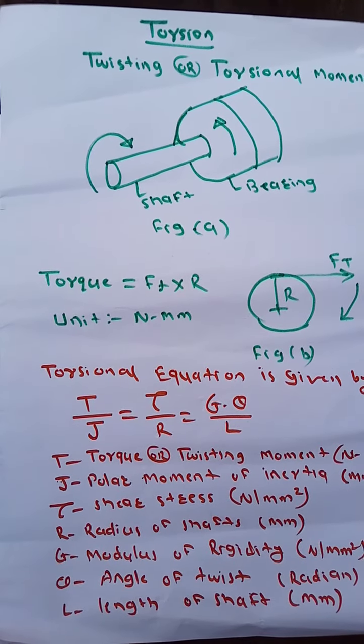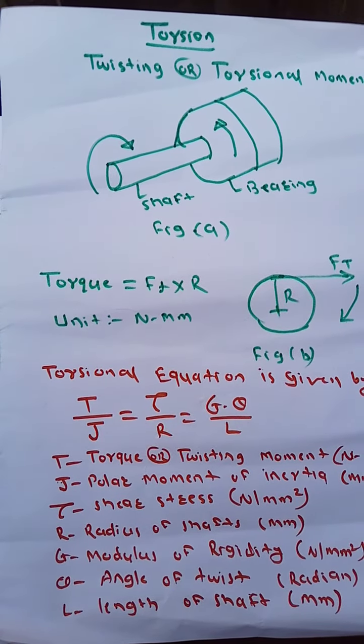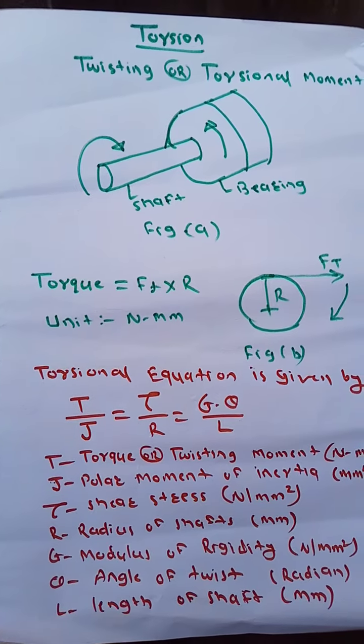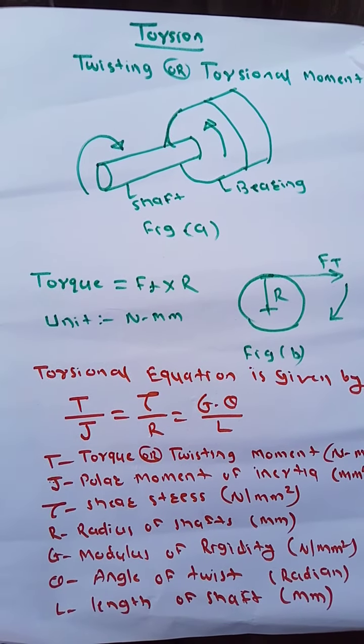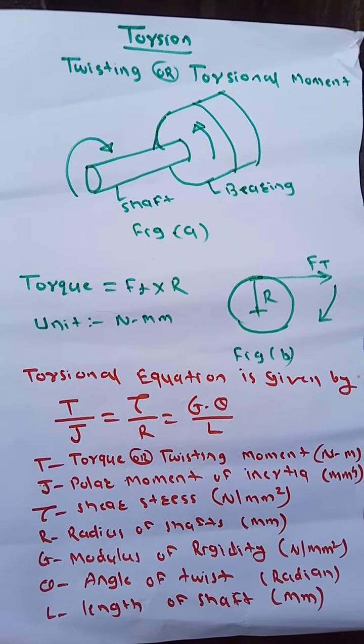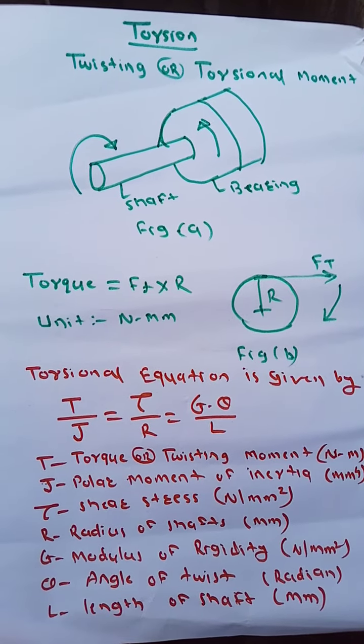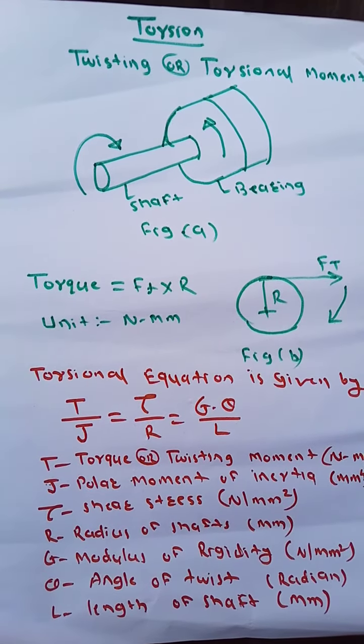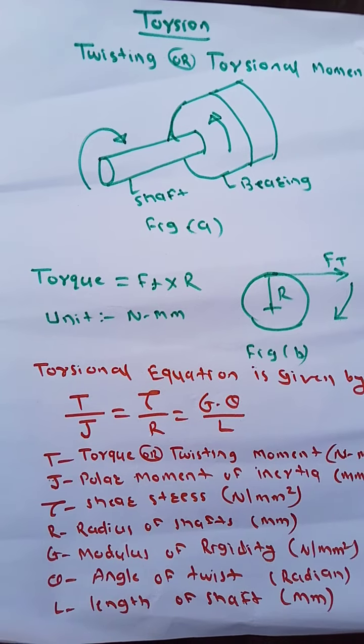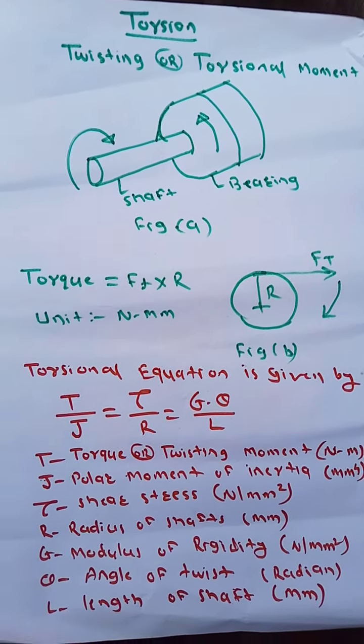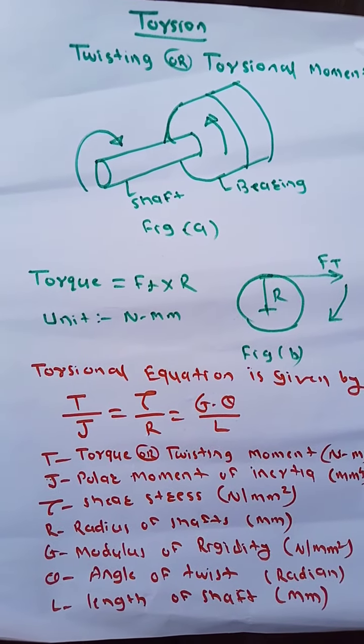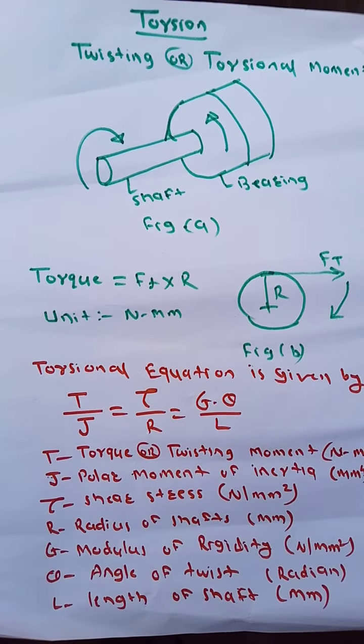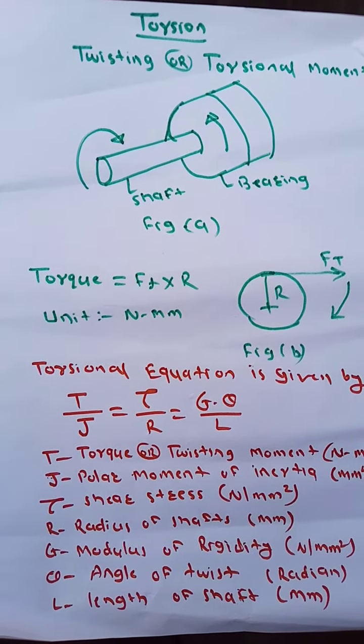Where T is torque or twisting moment in Newton meter, J is polar moment of inertia, tau is shear stress in Newton per mm squared, R is radius of the shaft in mm, G is modulus of rigidity in Newton per mm squared, theta is angle of twist in radians, and L is length of the shaft in mm.